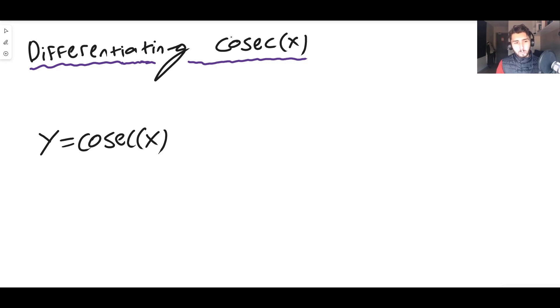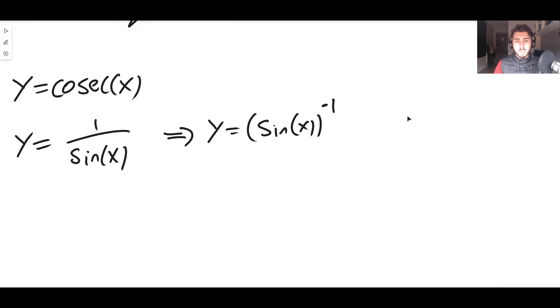I'm going to write this: if Y is cosec(x), then Y is also equal to 1/sin(x) because cosec is 1/sin by definition. This means that I can write Y to be sin(x) to the power of minus 1. It's not inverse sine—it's sin(x) literally to the power of minus 1.